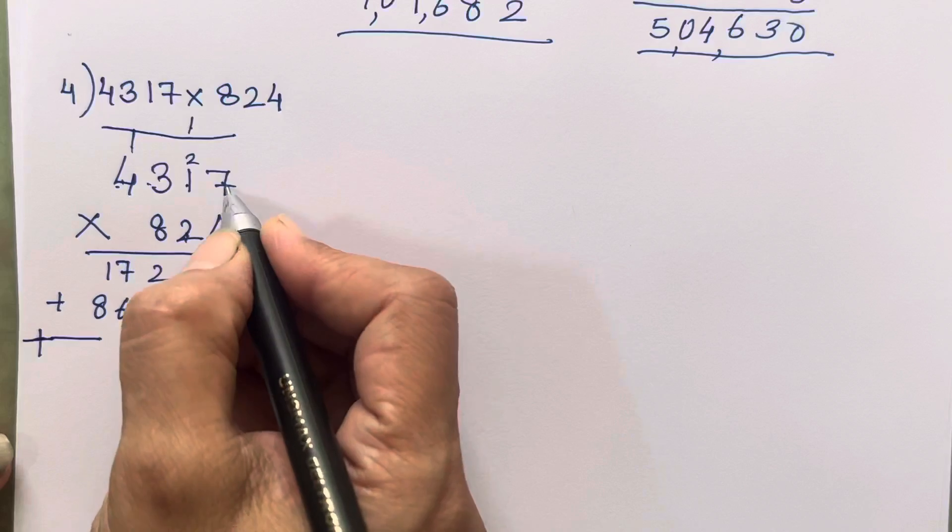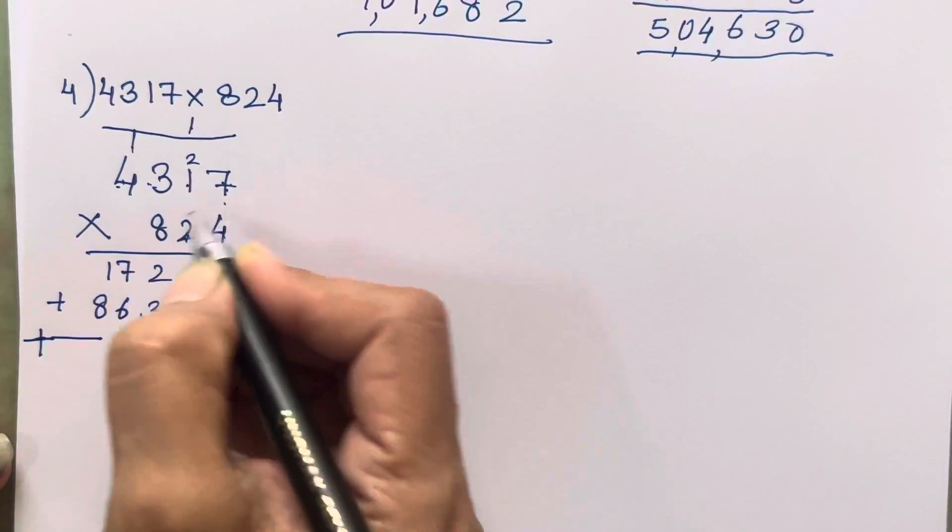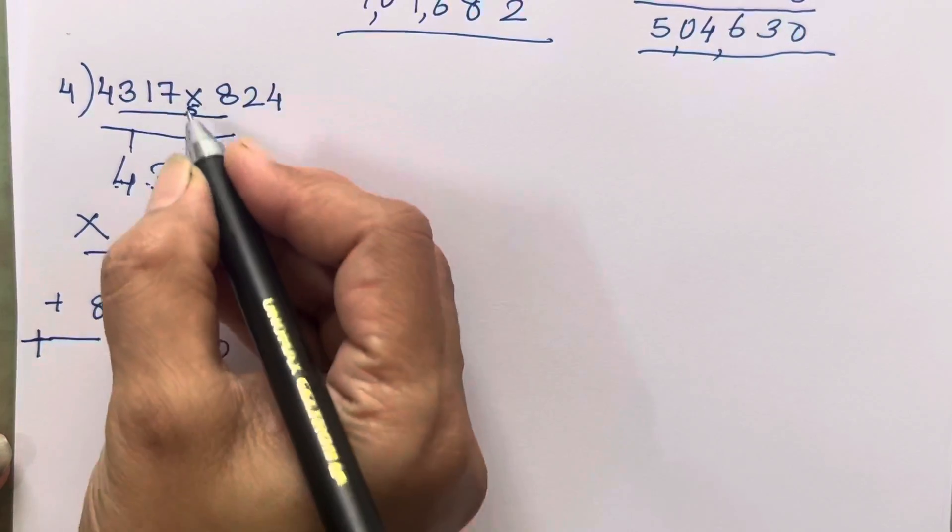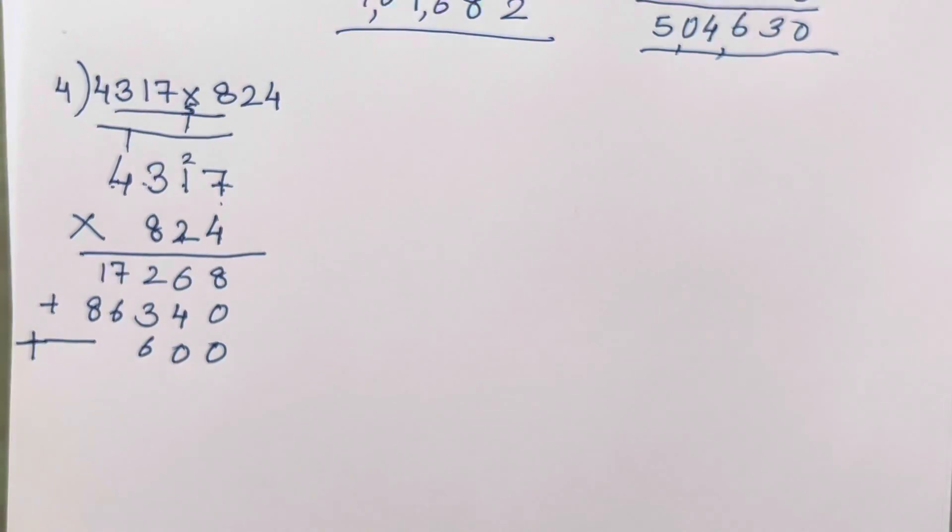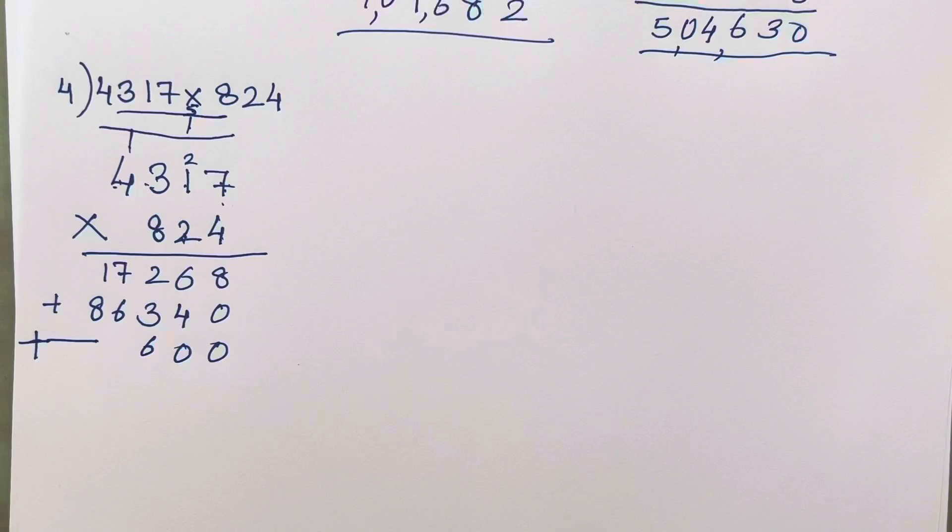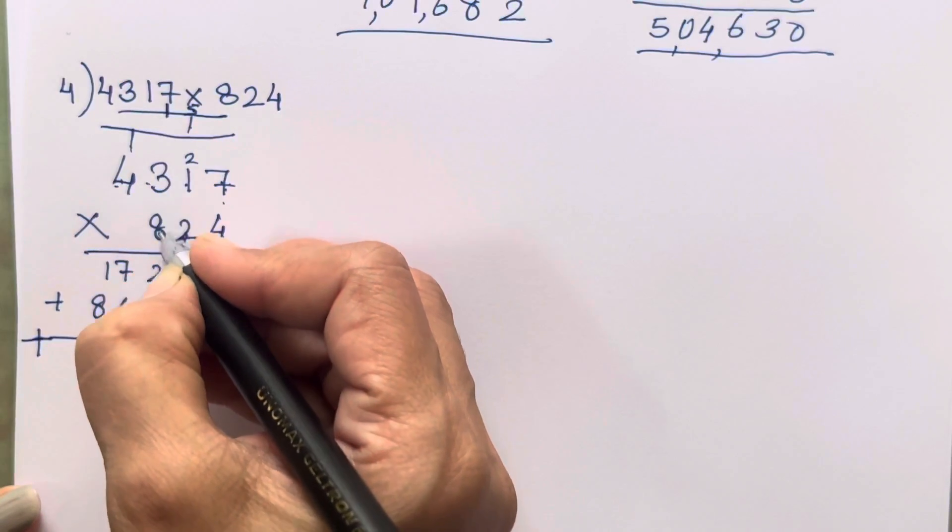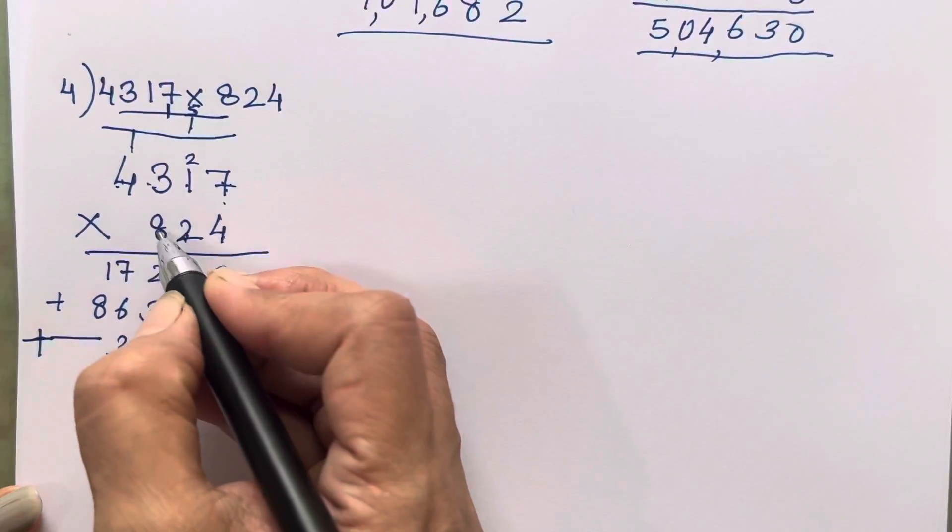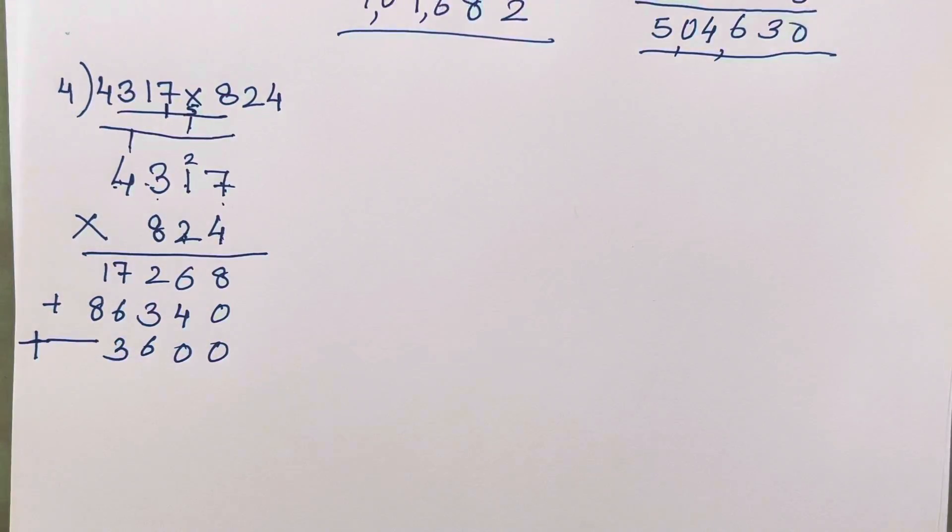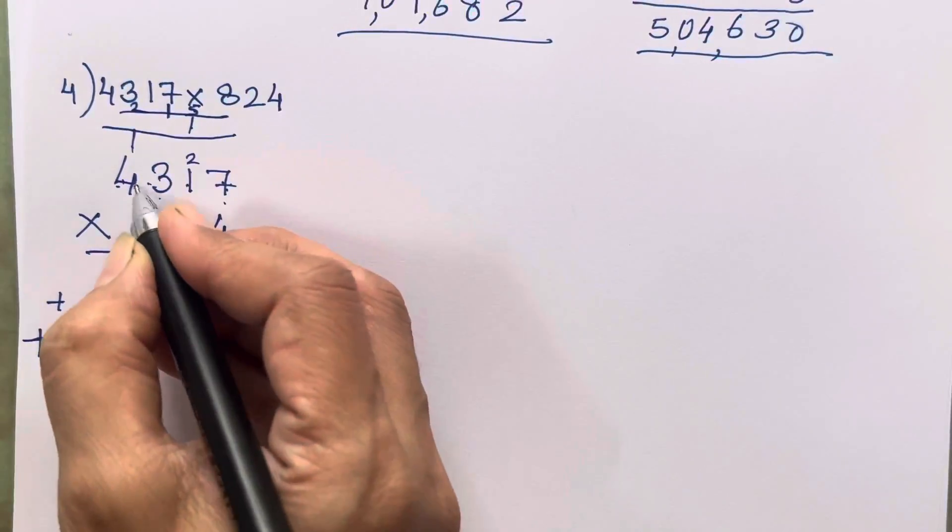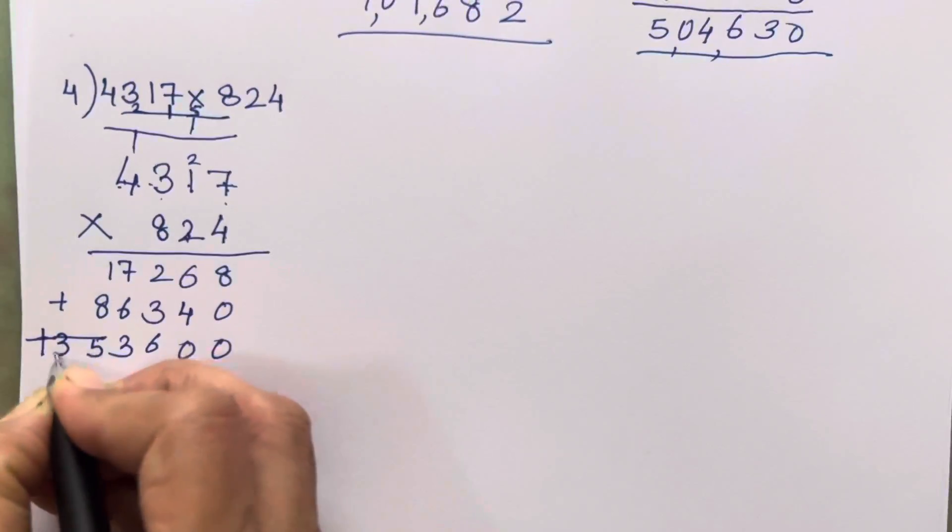2 sevens are 14, 2 ones are 2 plus 1, 3. 3 twos are 6, 2 fours are 8. We have to take one more number. So 8 sevens are 56. 8 ones are 8, 8 plus 5, 9, 10, 11, 12, 13. So 3 over here, 1 will be carried forward to the next number.